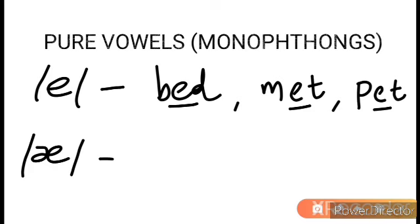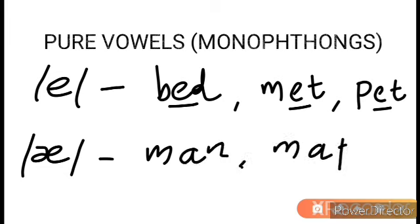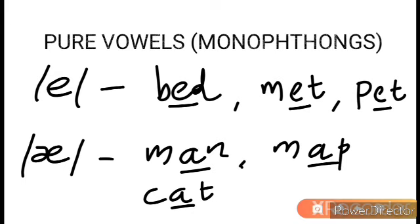The next sound is /æ/, which is pronounced a little bit longer than /e/. It is /æ/ as in man, map, cat, apple. So we have discussed four sounds so far: /ɪ/, /iː/, /e/, and /æ/.